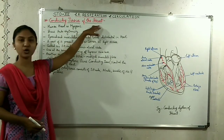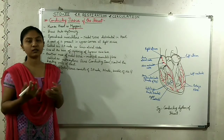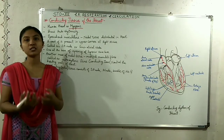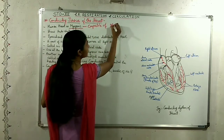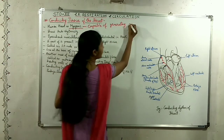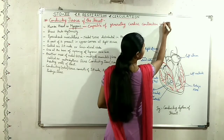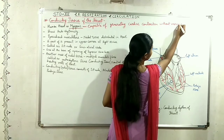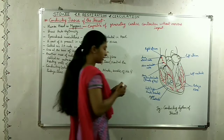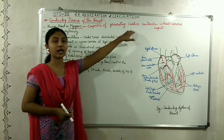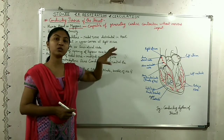We will talk about the conducting tissue of the heart. The human heart is myogenic, meaning it is capable of generating cardiac contraction independent of the brain's input or nervous input. It can generate cardiac contraction without the help of the nervous system. So, the human heart is myogenic in nature.